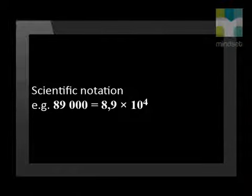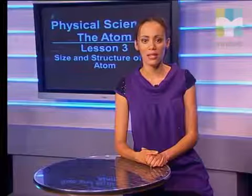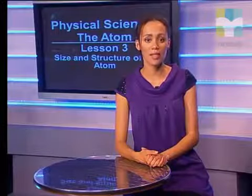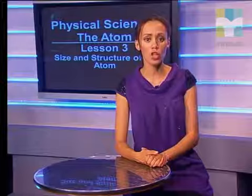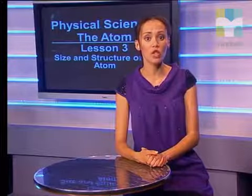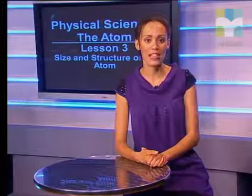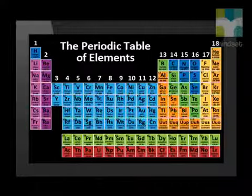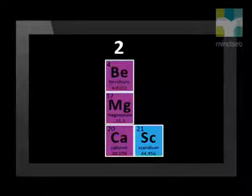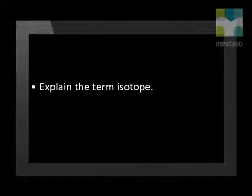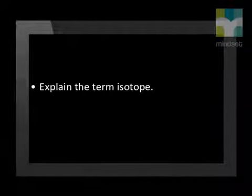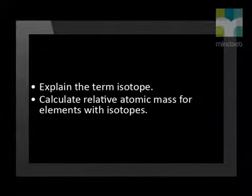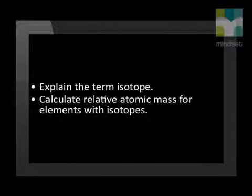we have to use scientific notation when writing down atomic mass or atomic radius. Since the mass of subatomic particles are so small, we will also use a more convenient unit for talking about atomic mass, namely relative atomic mass. We will use the periodic table to work out the number of protons, neutrons and electrons in a neutral atom. We will also explain the term isotope and calculate the relative atomic mass for elements with isotopes.